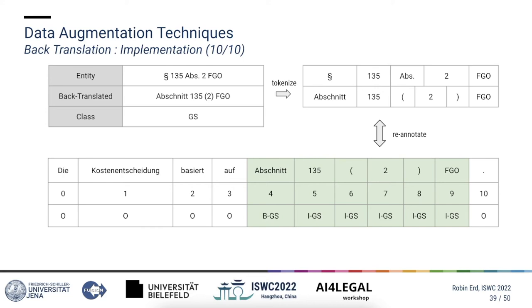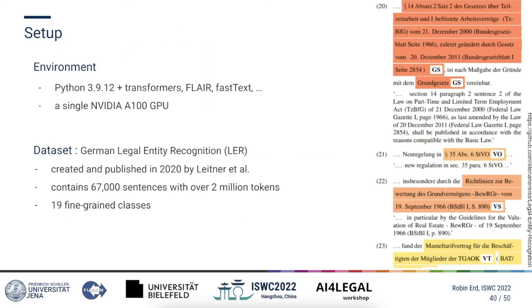Applying back translation takes about 12 seconds per sentence due to limits of the used translation service. In this next section I will briefly introduce our setup, the dataset, as well as the models that we work with, and present the key findings of our evaluation. The environment we were working in was running Python 3.9.12 and a variety of Python libraries such as the popular Transformers library, the Flair framework, and FastText embeddings. All evaluations were run on a single NVIDIA A100 GPU.